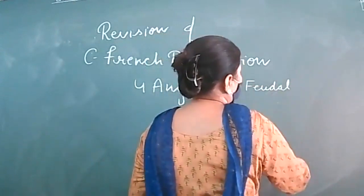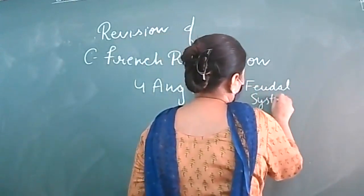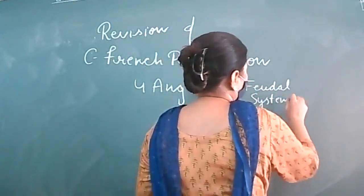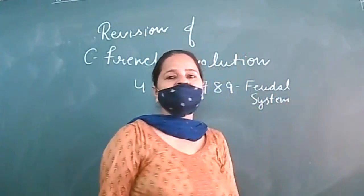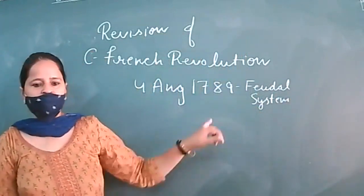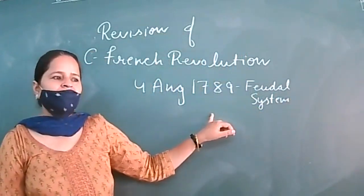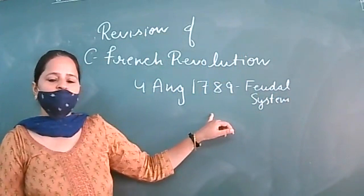What did he do? The feudal system was abolished. Privileges by birth and taxes were ended.